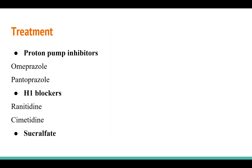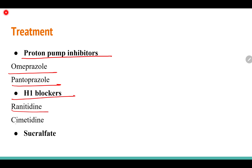The treatment for peptic ulcer includes proton pump inhibitors such as omeprazole and pantoprazole, H2 blockers such as ranitidine and cimetidine, and sucralfate.